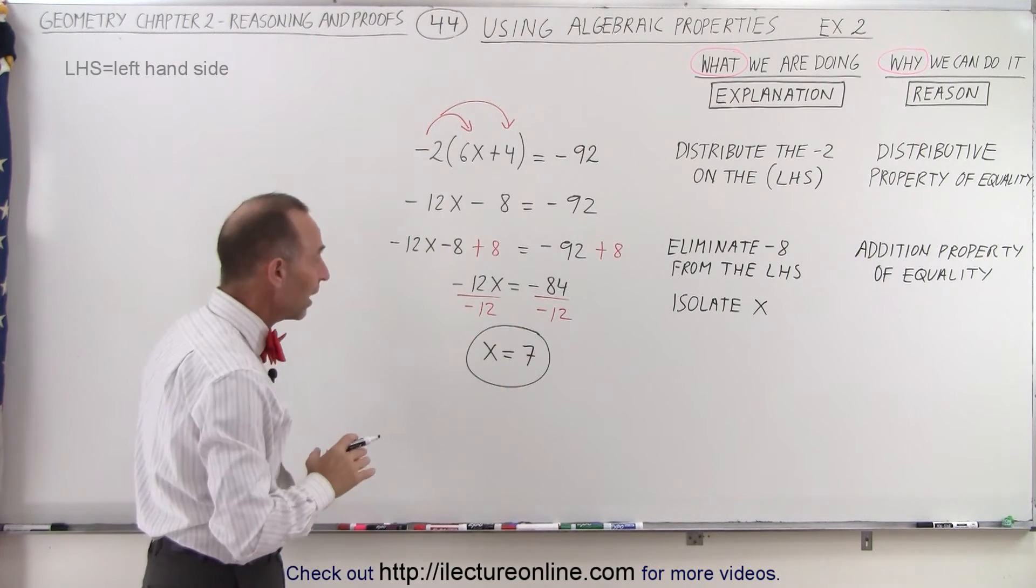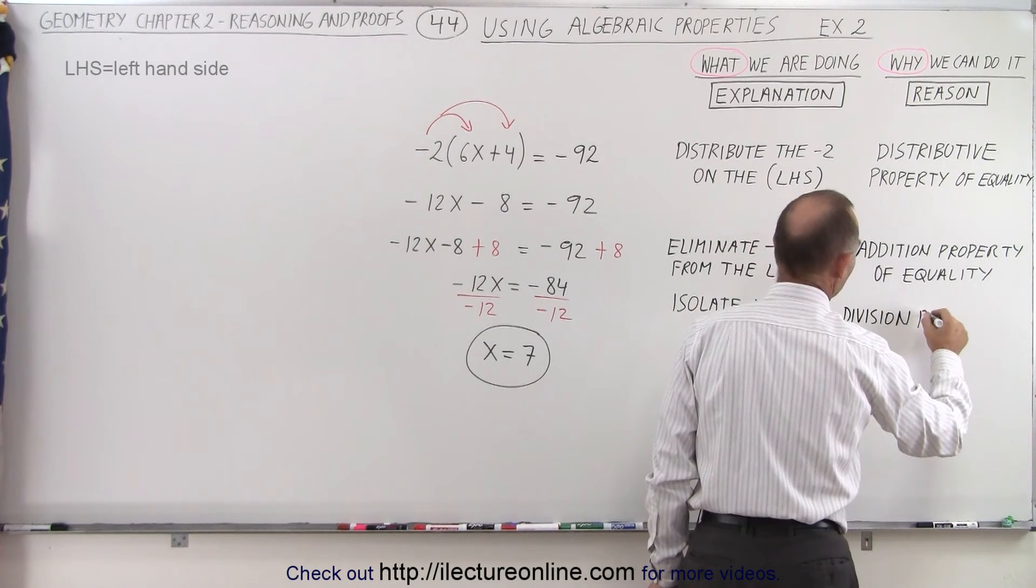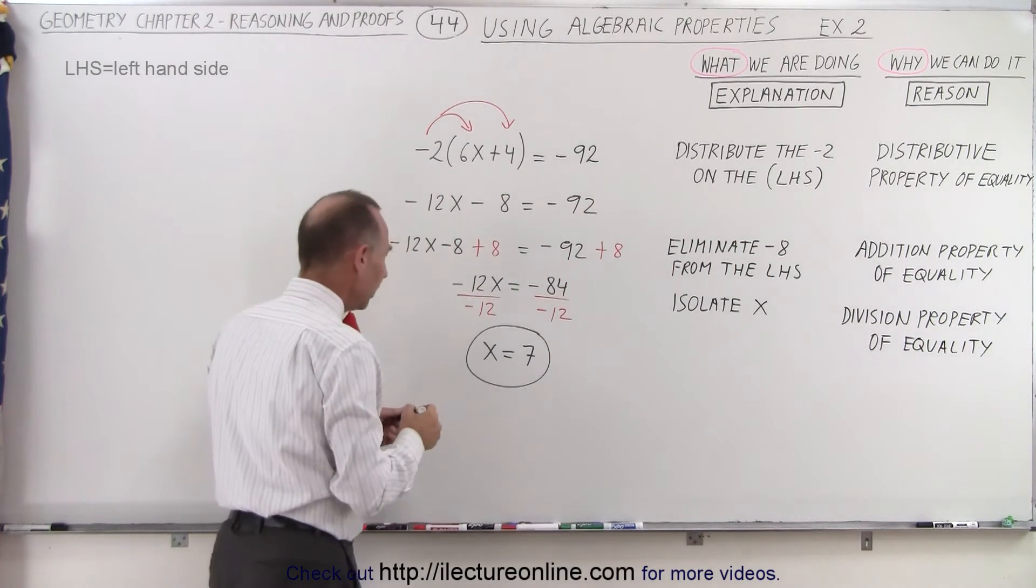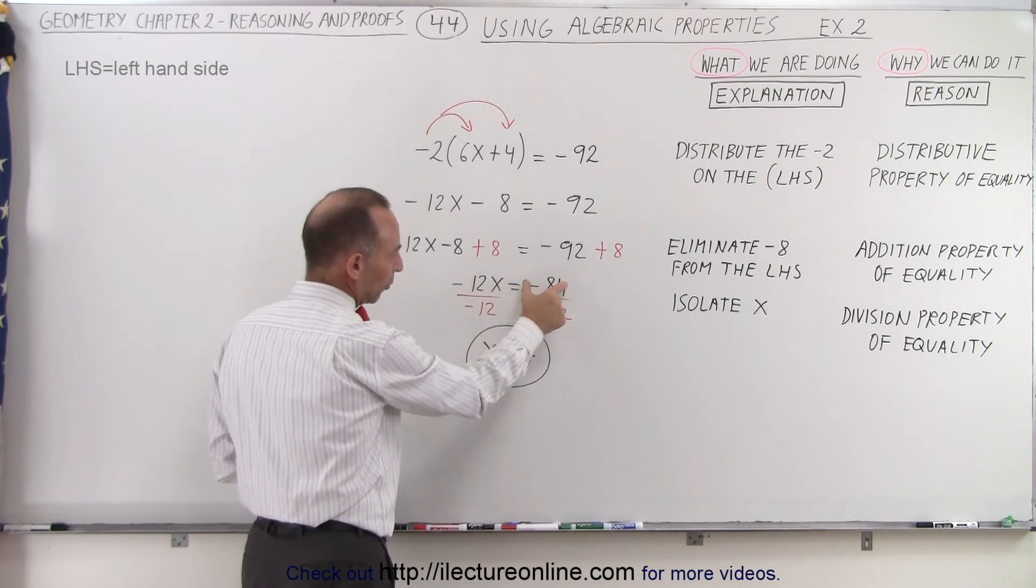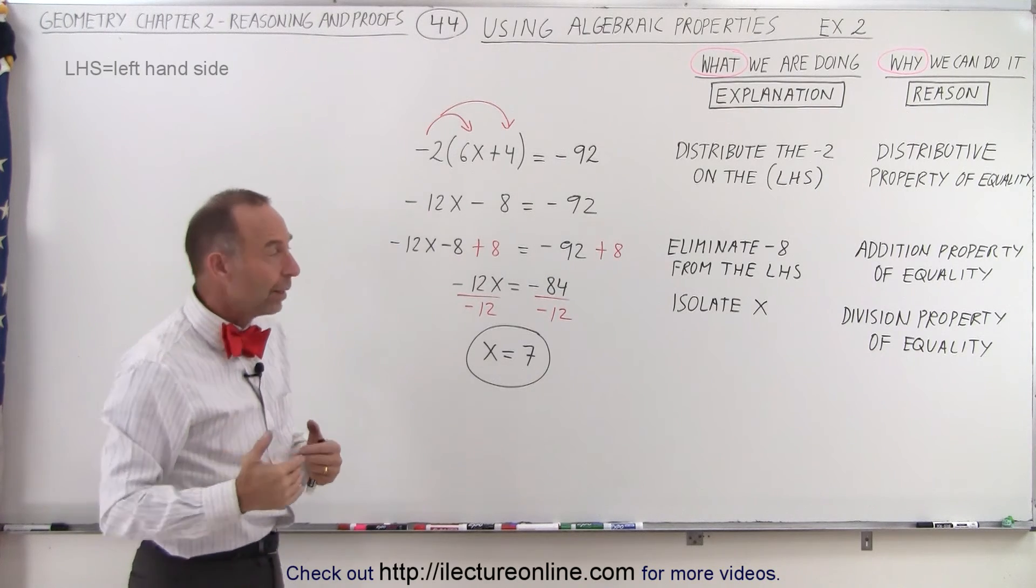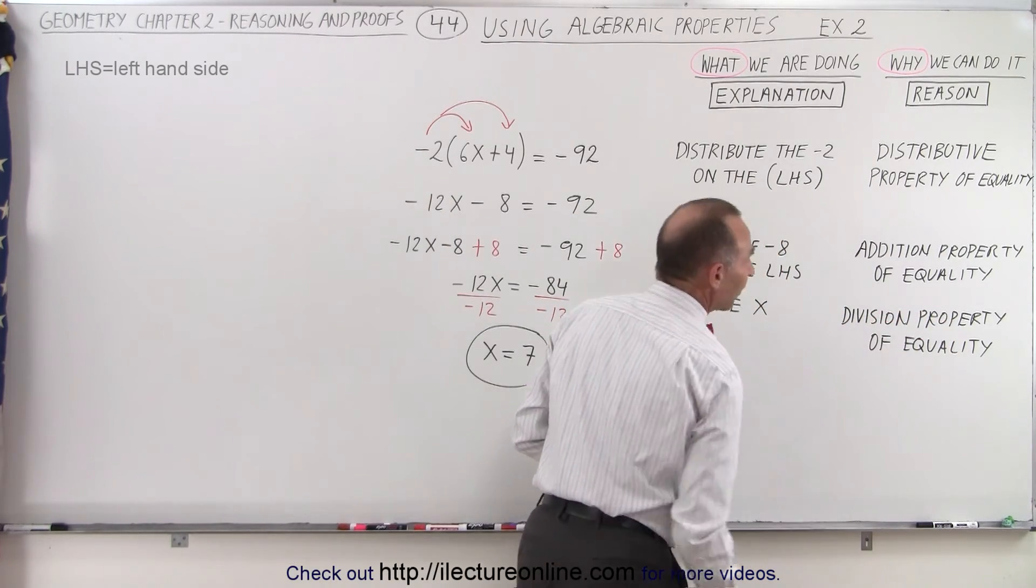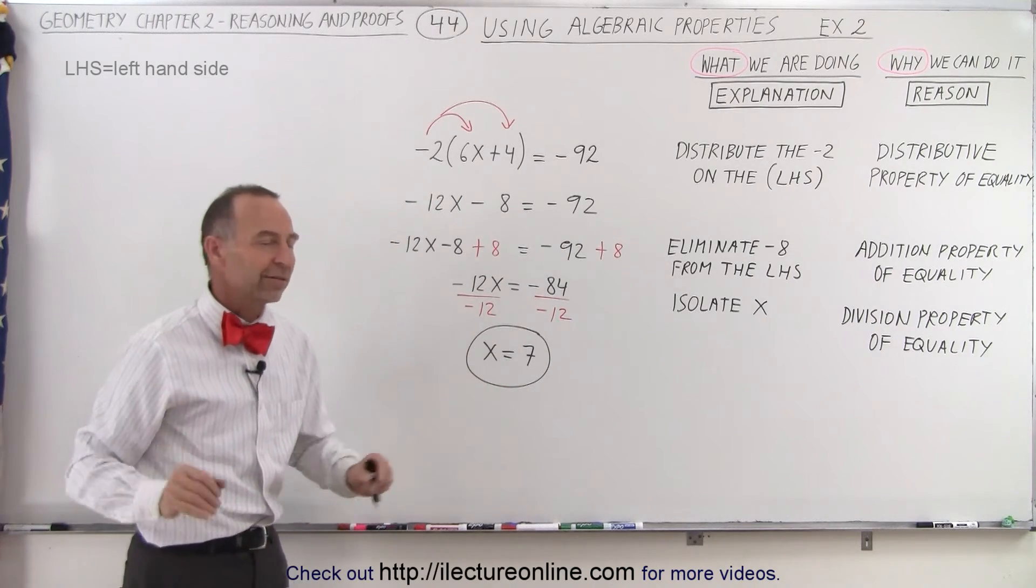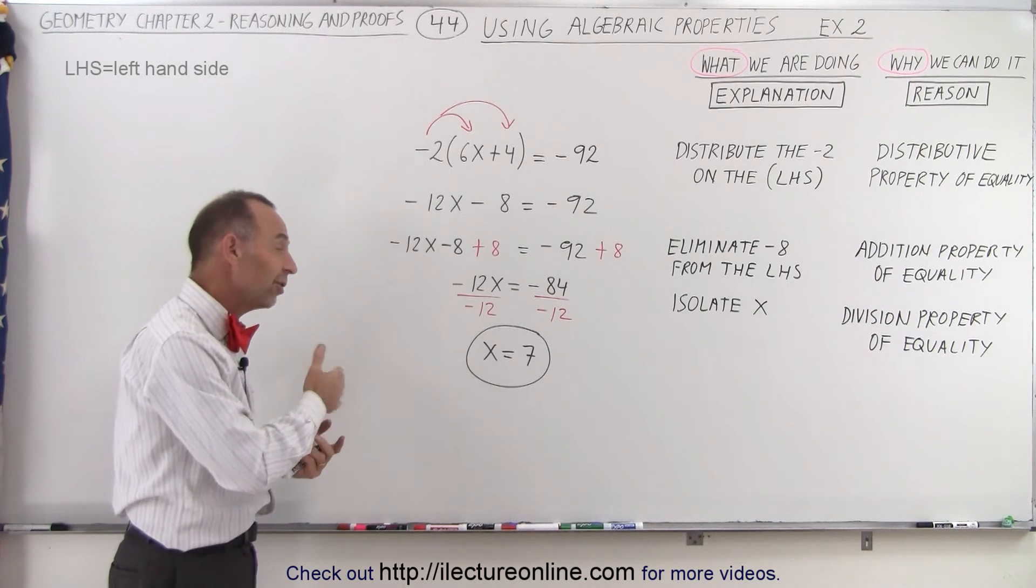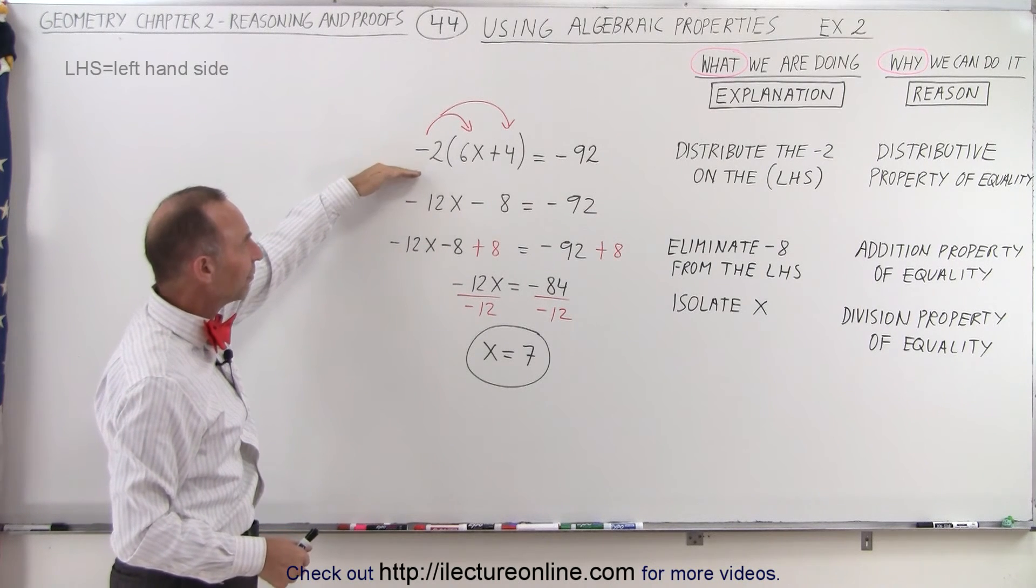The question I have is, why am I allowed to do that? I'm allowed to do that because I'm using the division property of equality. What that says is that since the left side, minus 12x, equals the right side, minus 84, I'm now allowed to divide both sides by the exact same quantity, which means that the left side will still equal the right side. I'm allowed to divide both sides by the exact same quantity without changing anything about the relationship, which means the left side still equals the right side. And so I've proven that x equals 7, based upon this initial given equation, that minus 2 times 6x plus 4 equals minus 92.